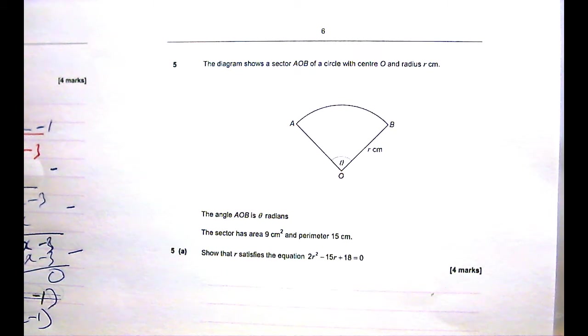We are told to show that R satisfies the equation 2R² - 15R + 18 = 0, given that the area is 9 cm² and the perimeter is 15 cm.